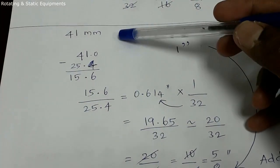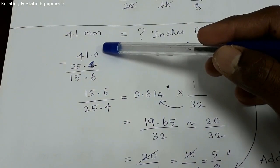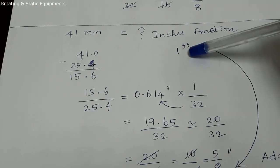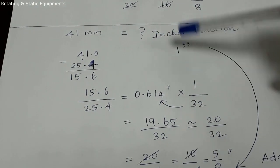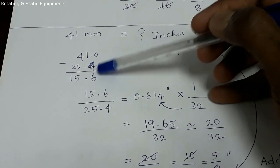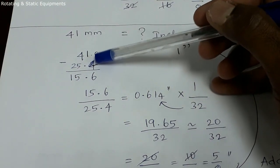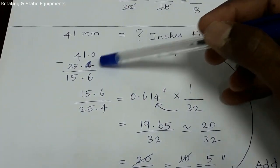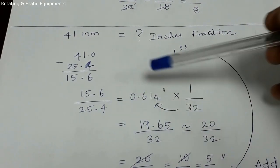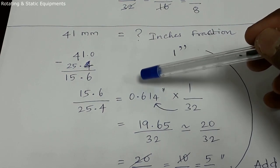41mm converted to inches fraction: 41mm on the spanner is 1 inch. So 1 inch on the spanner is 25.4mm. 41mm minus 25.4mm equals 15.6mm. Then 15.67 divided by 25.4 gives the decimal value of 0.614.